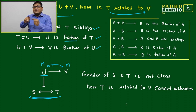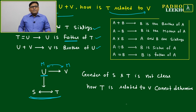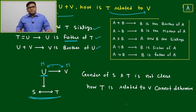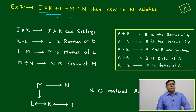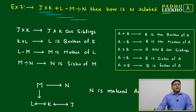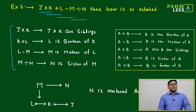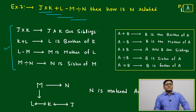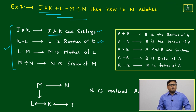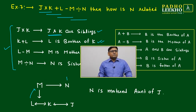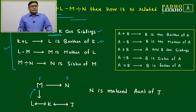Because the gender of T is not clear, we cannot determine how T is related to V. V will certainly be an uncle of S or T, but from T's perspective, the relation of T to V could be nephew or niece — we cannot determine. Moving to question number 7: J into K, K into L, L minus M, M divided by N — four mathematical symbols, so four relations. J and K are siblings; L is brother of K — same level; M is mother of L — different generation, M is higher than L; N is sister of M — also feminine.